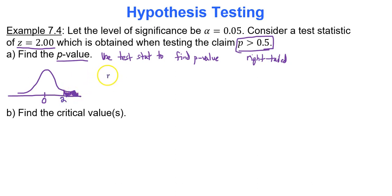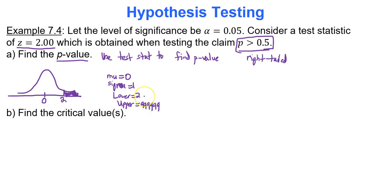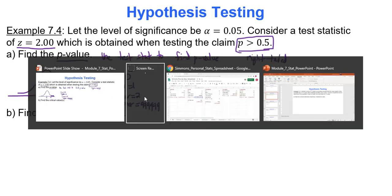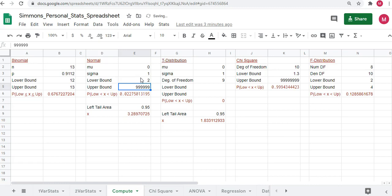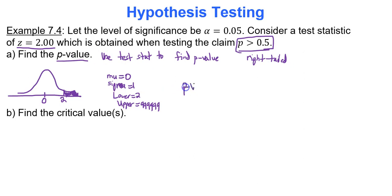To find the p-value, use Google Sheets. Mu is 0, sigma is 1. The lower bound is 2 and the upper bound is a really big number — 6 nines. Using the normal region, lower bound 2, upper bound 6 nines, the p-value to 4 decimal places is 0.0228.